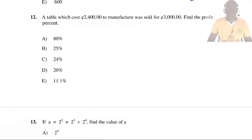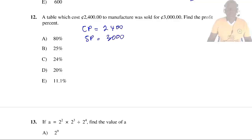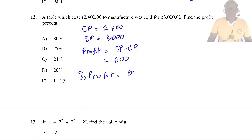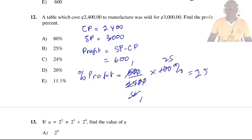Question 12: A table which costs 2,400 cedis to manufacture was sold for 3,000 cedis. Find the profit percent. Cost price = 2,400; selling price = 3,000. Profit = 600. Percentage profit = (600/2400) × 100% = 25%. So the answer is B.